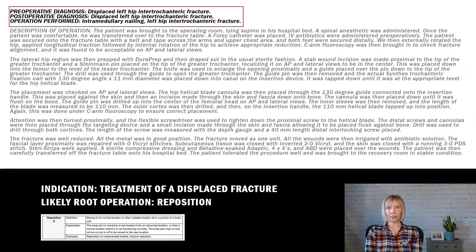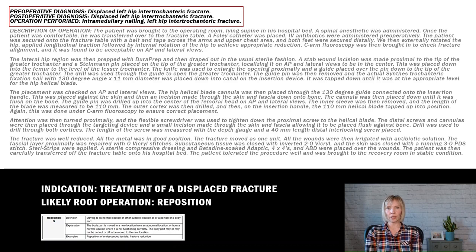When reviewing an operative report for PCS code assignment, the best place to start is by reviewing the title of the report and the indication for the procedure. This will help you to understand why the procedure is being done. By figuring out the purpose or the objective of the procedure, you can start to get an idea of what the root operation might be.